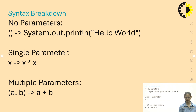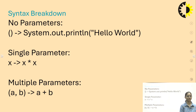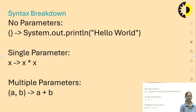The syntax breakdown of lambda expressions: with no parameter — empty braces with output on the right; with a single parameter — one variable on the left with output on the right; with multiple parameters — values inside braces with a return value on the right side using the arrow operator.